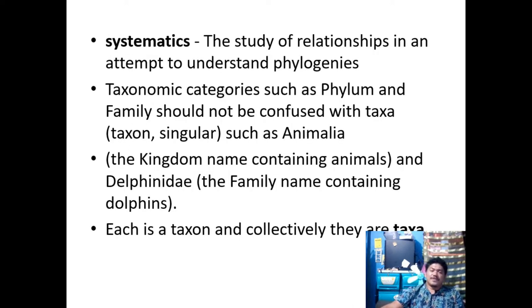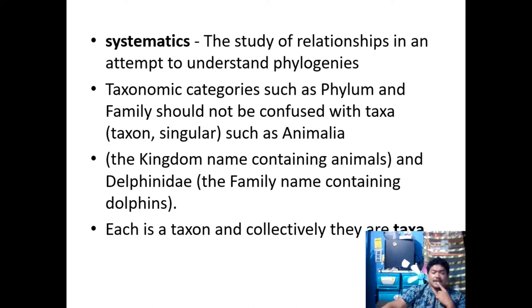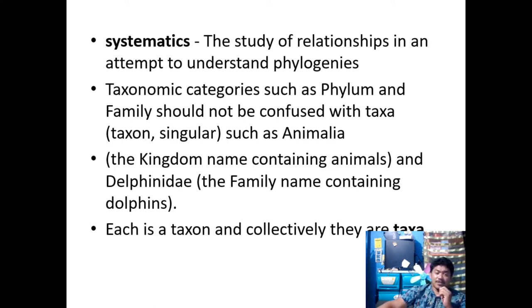Systematics is the study of relationships in an attempt to understand phylogenies. Taxonomic categories such as phylum and family should not be confused with taxa — such as Animalia. For example, the kingdom Animalia differs from kingdom Plantae in cellular structure, adaptation, and morphological functions. The family Delphinidae contains dolphins, and each such group is collectively known as taxa.